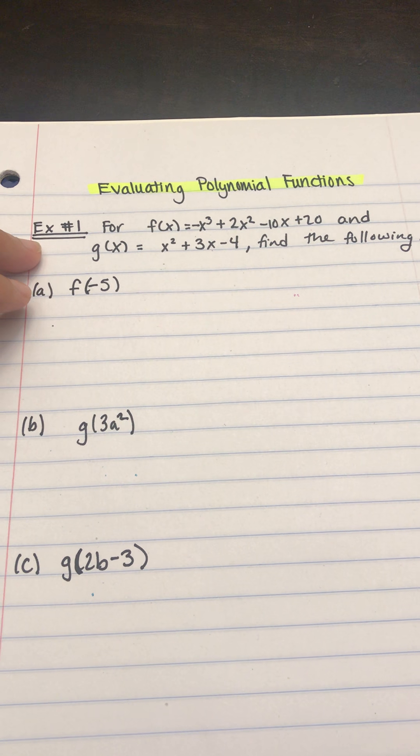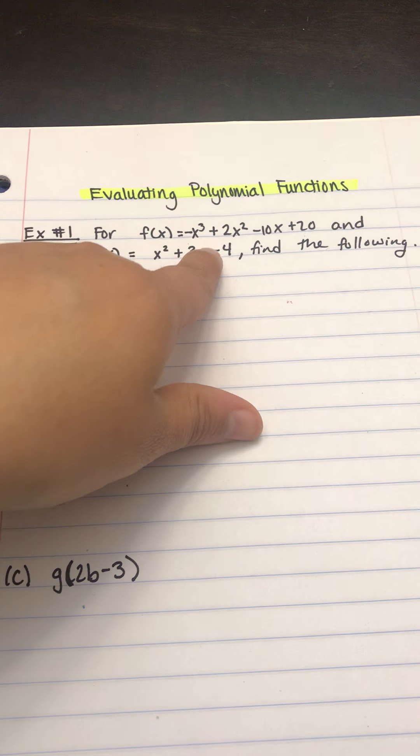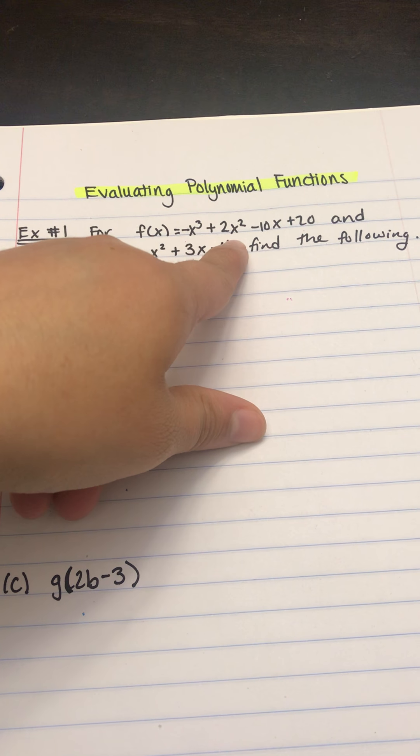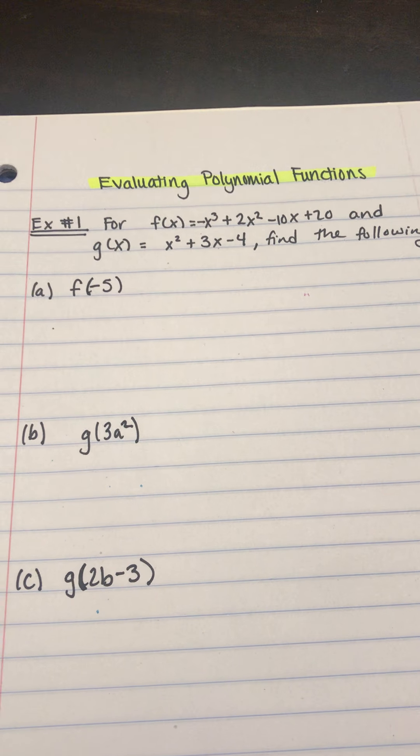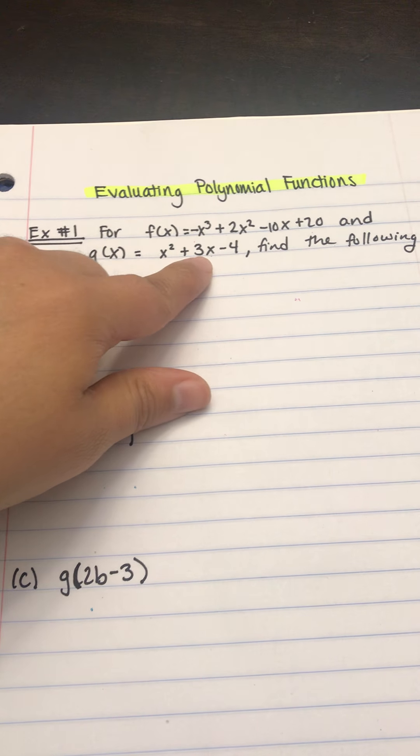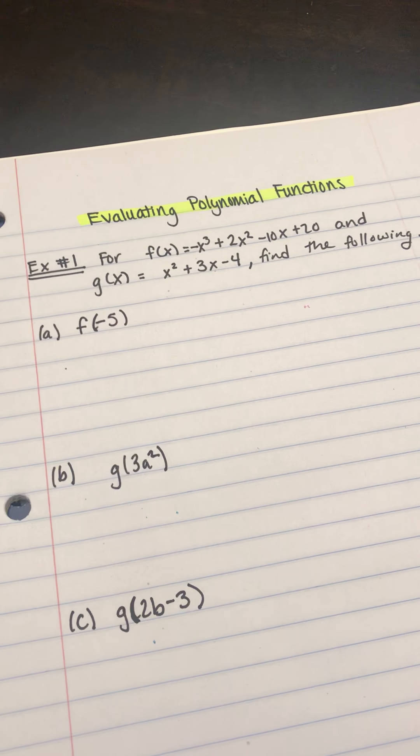So for this particular example, anytime we're using f, we're going to use negative x cubed plus 2x squared minus 10x plus 20. And for g, we're going to use x squared plus 3x minus 4 to answer these questions.